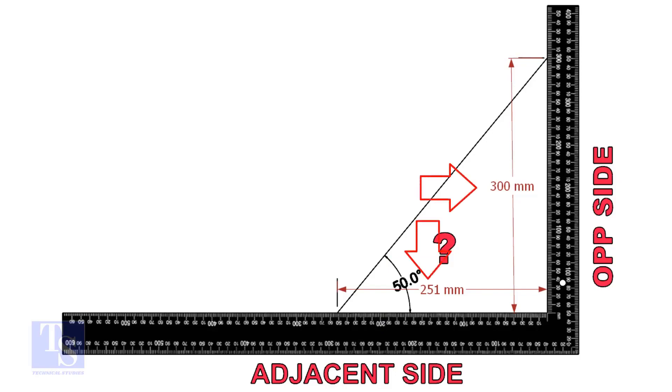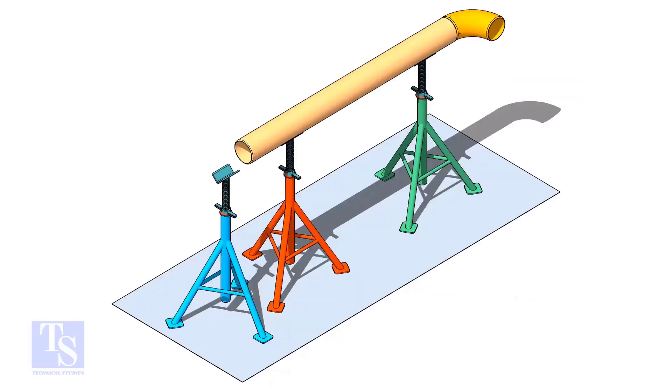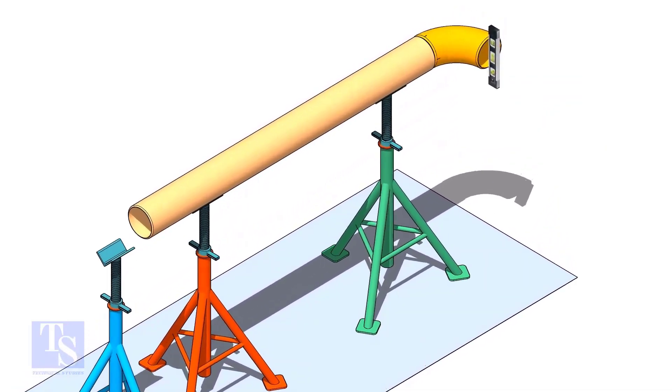Mark these dimensions on a large right angle, as shown. Level the pipe and the elbow that is already fitted on the pipe.